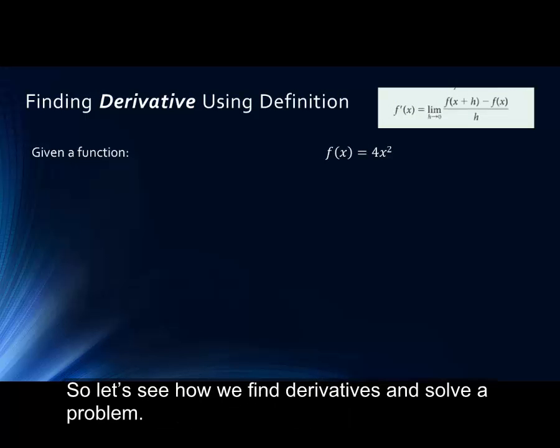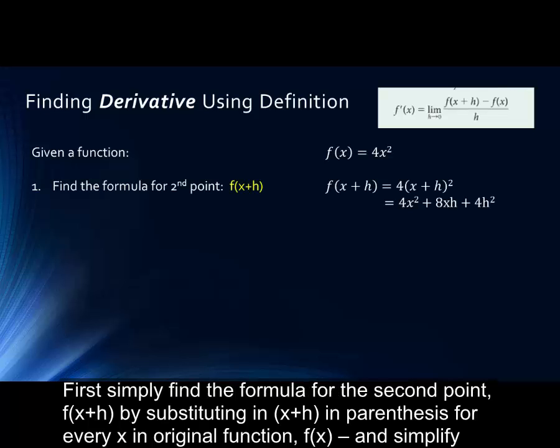So, let's see how we find derivatives and solve a problem. First, simply find the formula for the second point, f of x plus h, by substituting in x plus h in parentheses for every x in the original function, f of x. Then we simplify, in this case we expand it.